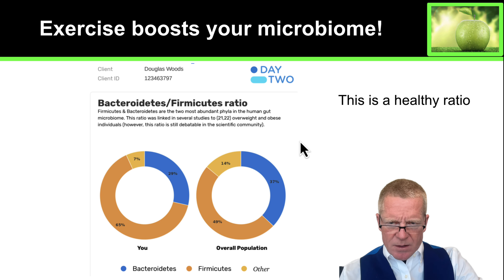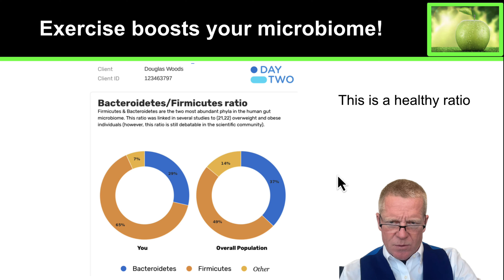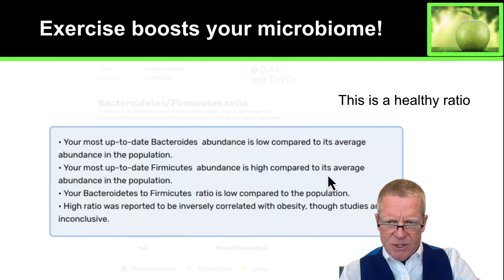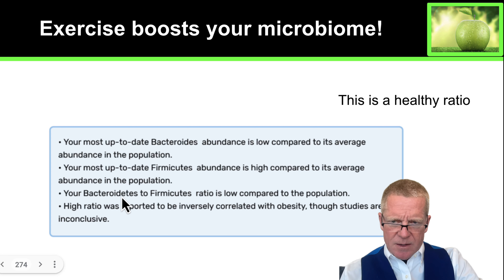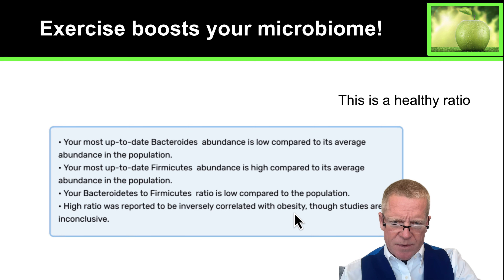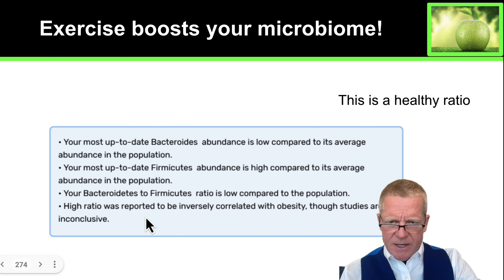You can see the different ratios of me compared to the overall population. What they found was that my Bacteroidetes abundance is low compared to the average population, and that's a good thing because a high ratio is correlated with obesity through a variety of different studies.